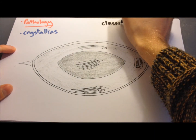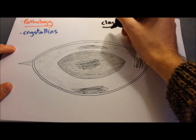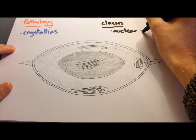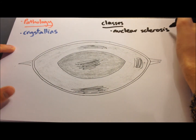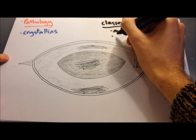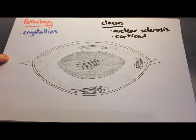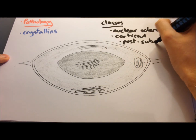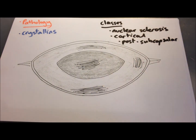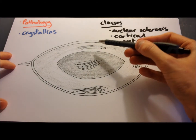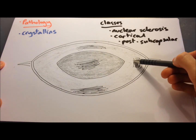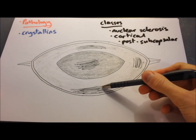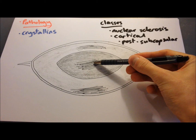We classify age-related cataracts into different types depending on where they are in the lens. The most common is nuclear sclerosis, found in the nucleus, formed by new layers of fibres compressing onto the lens nucleus. There's also cortical cataract — opacification of the cortical fibres. Then we have posterior subcapsular, located in the central posterior part of the lens. These three types — cortical, posterior subcapsular, and nuclear sclerosis — are the main classifications.